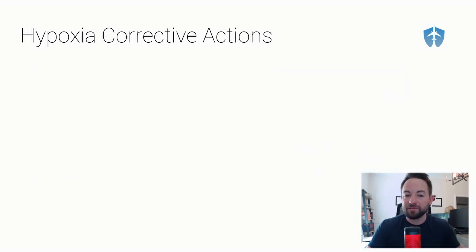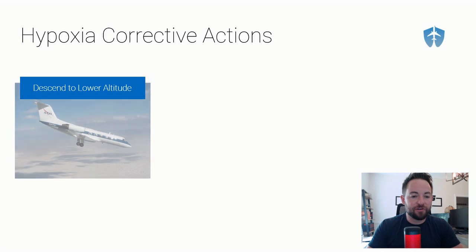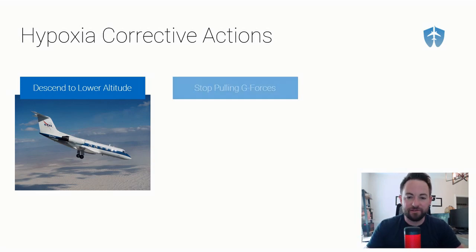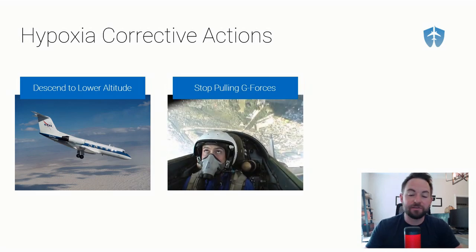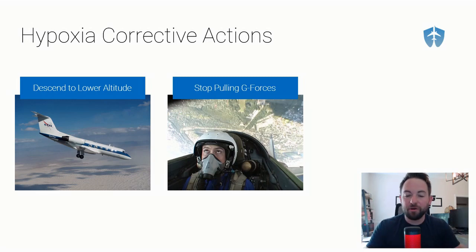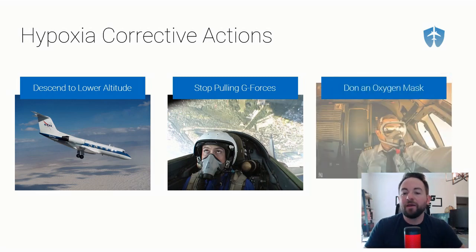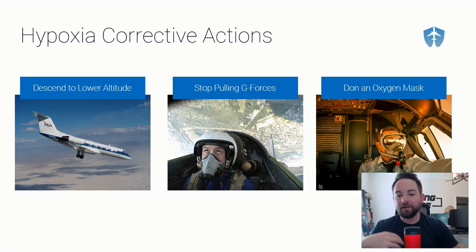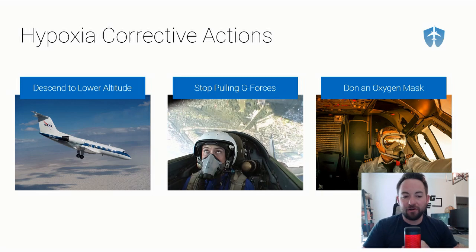If you're feeling any of those symptoms while flying, suspect hypoxia. There are basically three things you can do: you can descend to a lower altitude where the air is more dense to address hypoxic hypoxia; you can stop pulling G-forces so that the heart can start pumping blood up to the brain again for stagnant hypoxia; and lastly, you can put on an FAA-approved oxygen mask, depending on what flight level or altitude you're flying at, to provide supplemental oxygen.